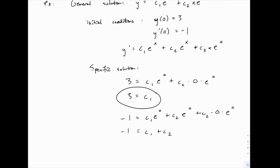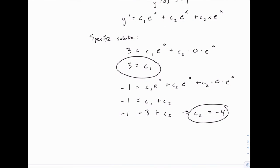And now that we know the value of c1, we can plug that in and solve for c2 which is negative 4, which means our specific solution is y equals 3 e to the x minus 4 x e to the x.